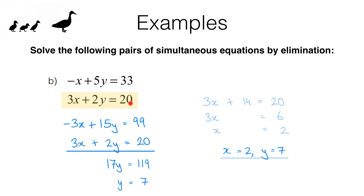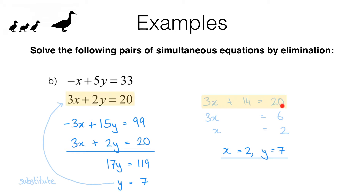Here's my solution. I multiplied the first equation through by 3, giving me a negative 3x to eliminate with the 3x. Rewriting the second equation unchanged and adding the two together gave me 17y equals 119. Dividing by 17 gives y equals 7. Substituting y equals 7 into the second equation: 3x plus 14 equals 20, so x equals 2. My solution is x equals 2, y equals 7.